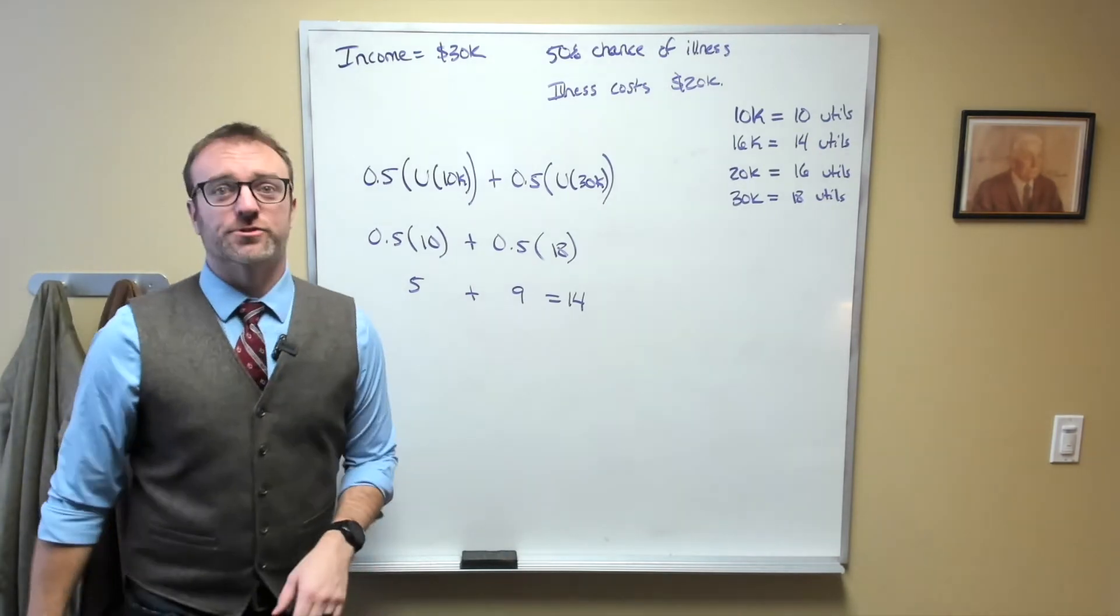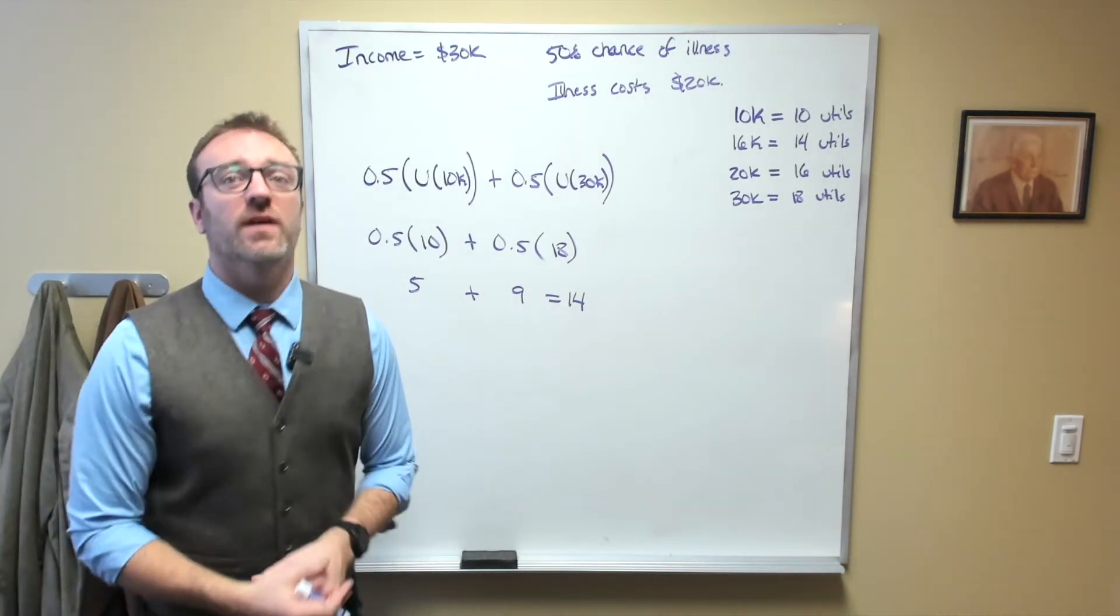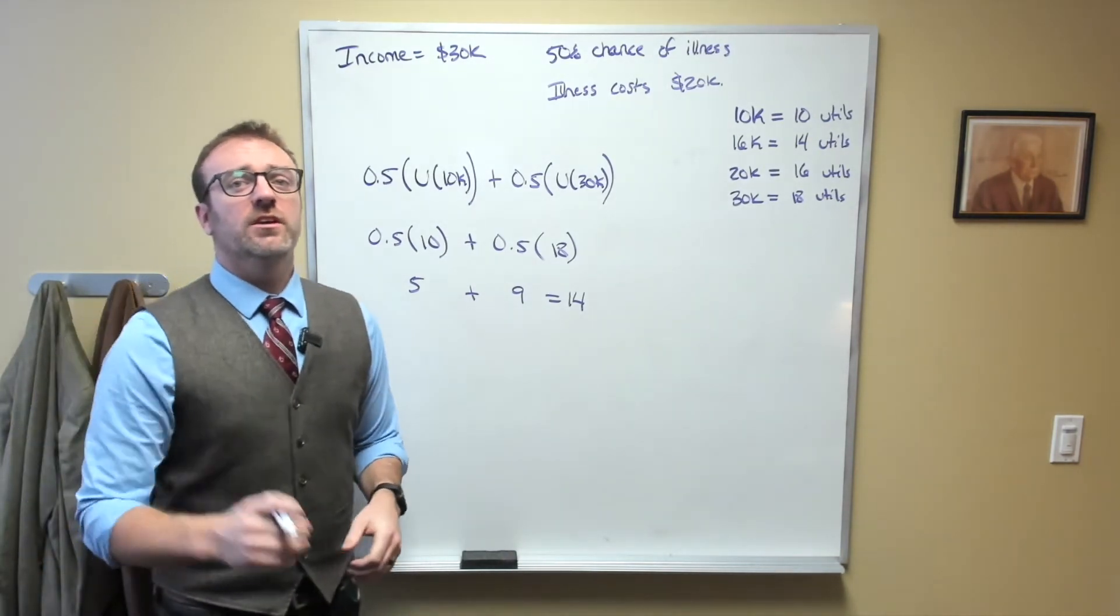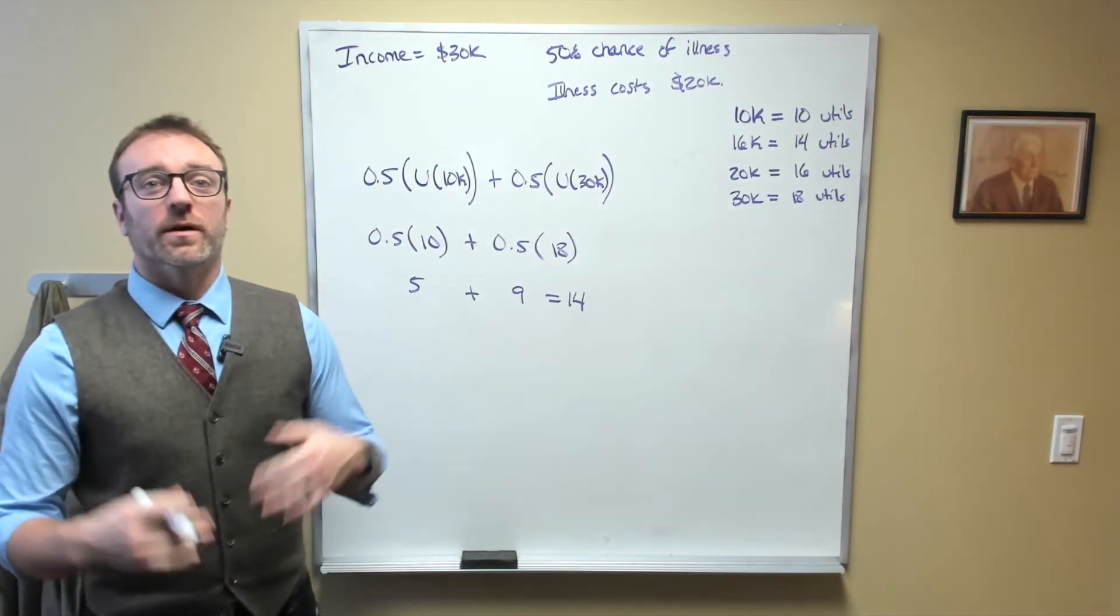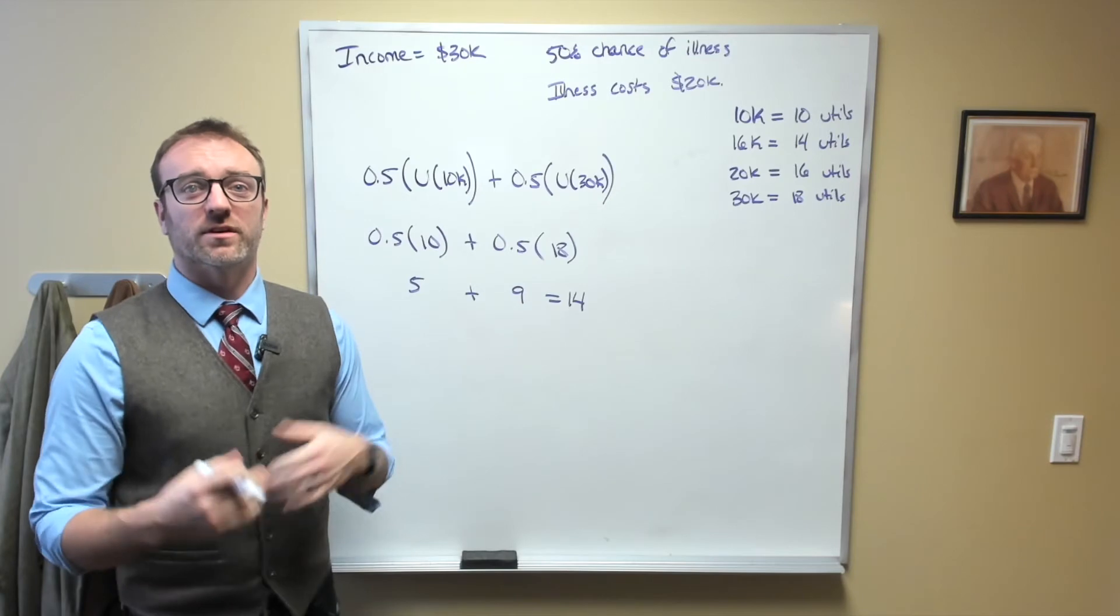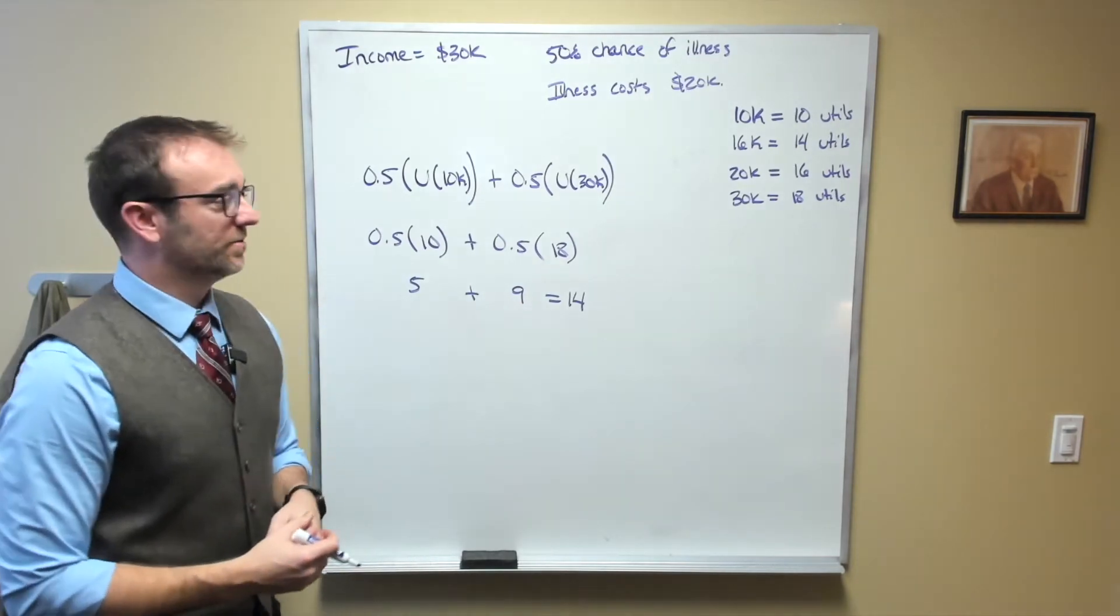Now, actuarially fair insurance would cost them $10,000 per year. And I'll leave it to you to verify this. This means that their income per year net of expenses would be a constant $20,000.